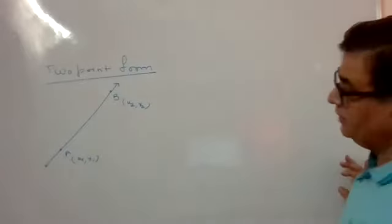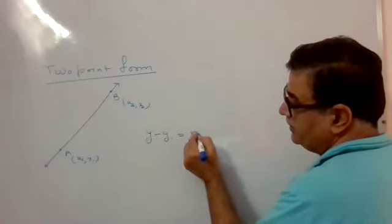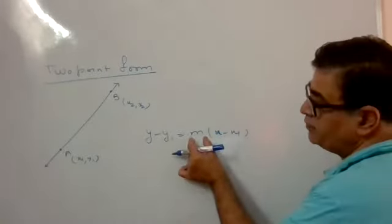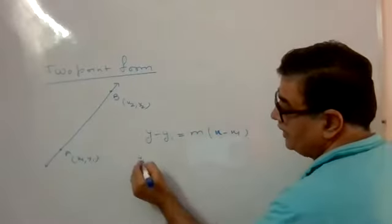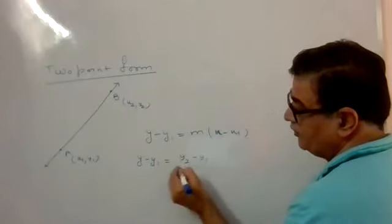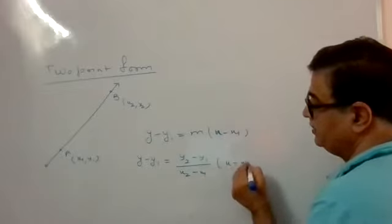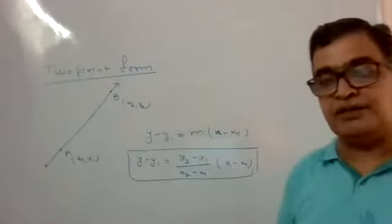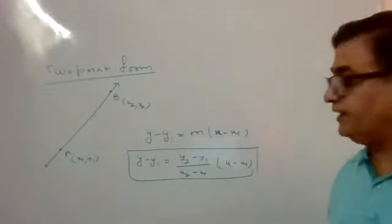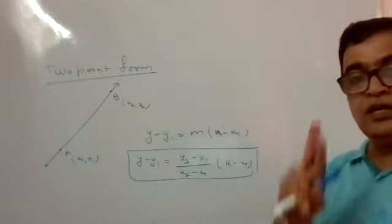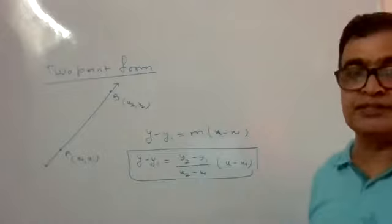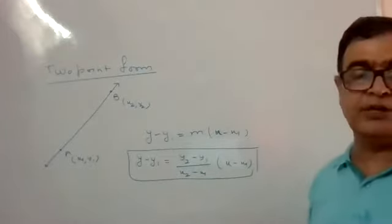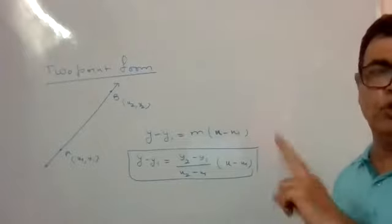The equation of the line we already have: y minus y1 equals m times (x minus x1). The slope m can be obtained from the two points, so the equation becomes y minus y1 equals (y2 minus y1)/(x2 minus x1) times (x minus x1). This is the equation in two-point form. Slope-point form and two-point form are more or less the same.